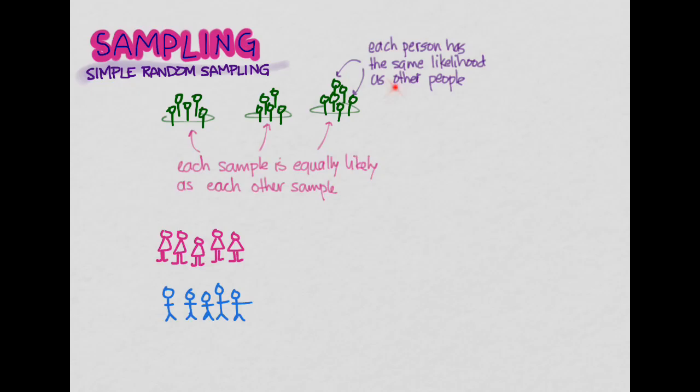Now it is possible to have each person having the same likelihood of being chosen as everyone else, and yet not each sample be equally likely as other samples. So let me give you an example to show you how.